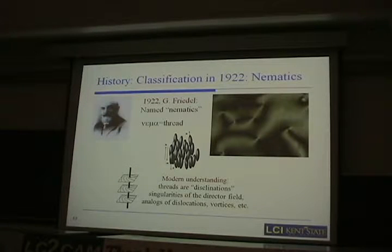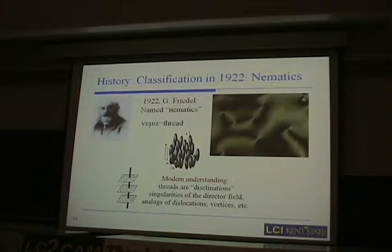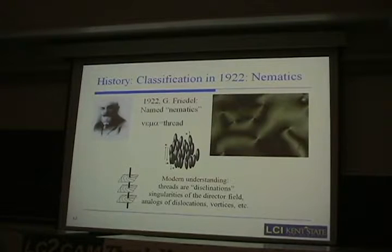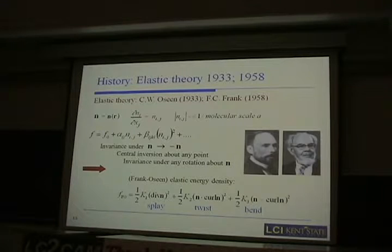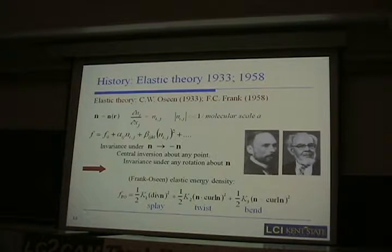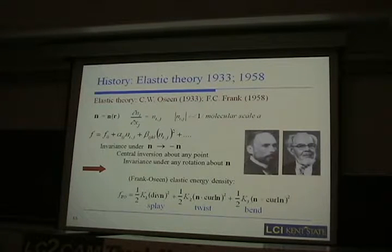Back to the history: in the very same 1922 article that introduced nematics as a term, Friedel made another important observation about smectics. The physicists at that time wondered how one could describe the deformed state of liquid crystals, including disclinations and linear defects. It was Oseen who proposed the first theory of elasticity of nematic liquid crystals, and about 25 years later Frank rewrote this theory, introducing a couple of original elements, but in essence it was the same theory Oseen had proposed.